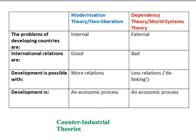Whilst modernisation theory and neoliberalism would see the problems of developing countries as mainly internal — to do with corruption, economic mismanagement, and aspects of culture — both Dependency Theory and World Systems Theory place more emphasis on the external problems that poorer countries face, namely the way in which they've been exploited by other countries. Whereas modernisation theory and neoliberalism would argue that international relations and more trade are good for the developing world, both Dependency Theory and World Systems Theory argue that in the current system these things are bad and just involve exploitation.